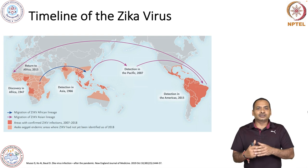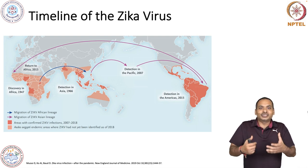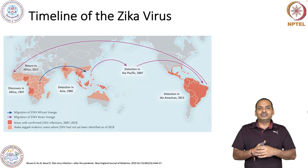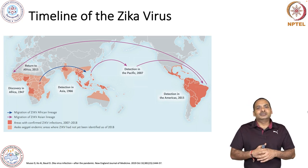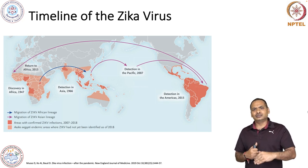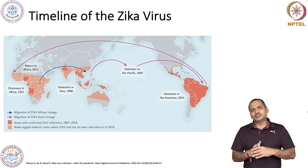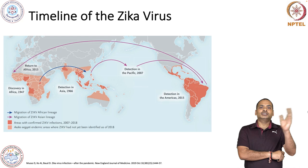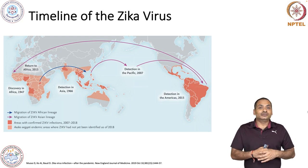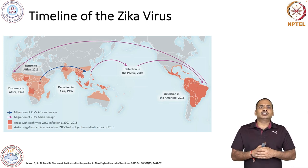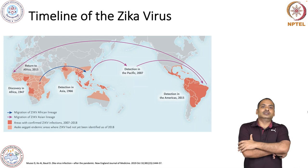Human movement is not only improving trade or economy, but it also transports diseases. Due to this ease in transport, disease is quite frequently hopping from one continent to another. That is also the reason why the SARS-CoV-2 pandemic spread so rapidly all over the world.